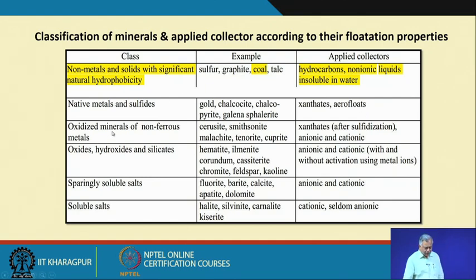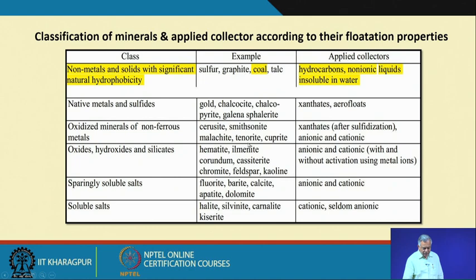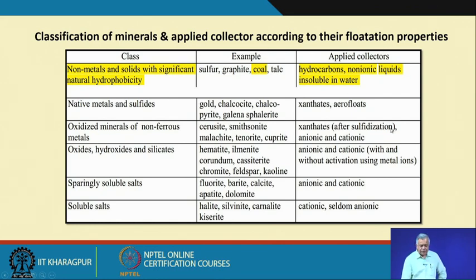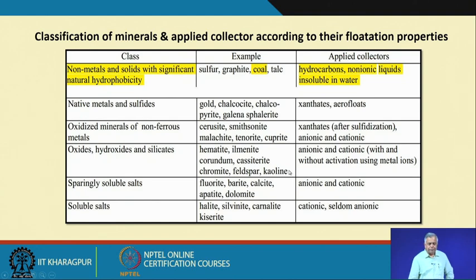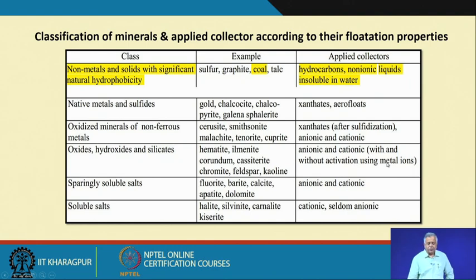For oxide minerals of non-ferrous metals — like cerussite, smithsonite, malachite, tenorite, and cuprite — it has been observed that xanthates with a sulphidization process, and both anionic and cationic collectors, work effectively. For oxides, hydroxides, and silicates — examples being hematite, ilmenite, corundum, cassiterite, chromite, feldspar, and kaolin — anionic and cationic collectors with and without activation using metal ions can be used.